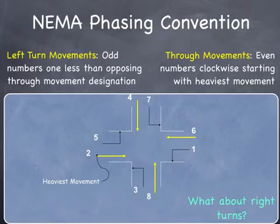There is a convention for identifying phases. The different movements are numbered. Through movements are even numbers: two, four, six, and eight. Left turn movements are given odd numbers: one, three, five, and seven.